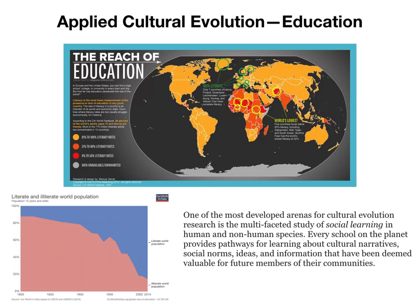Similarly, if we look at education and understand that it is a formalized, institutional version of something much more general — one of the most developed arenas for cultural evolution research is the study of social learning in human and non-human species. Every school on the planet, in one form or another, teaches cultural narratives, social norms, ideas, ways of solving problems, ways of thinking, and developing emotional capacities to process information — changing how social learning occurs at individual, community, and larger societal scales. Education, broadly understood, is an area where a huge amount has been learned about how to apply cultural evolution at institutional scales.